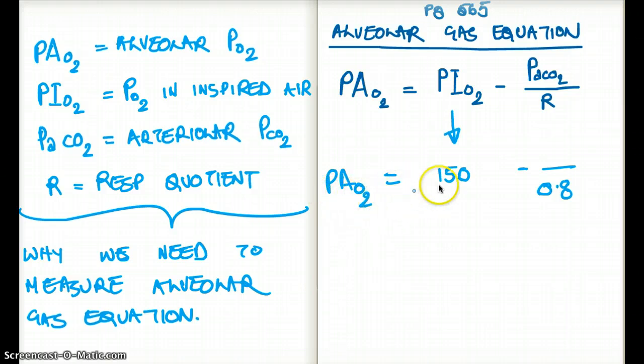PAO2, the big A-O2, is equal to 150 minus P arterial CO2 divided by 0.8. See how this equation is so much simpler to remember now? That's all about alveolar gas equation.